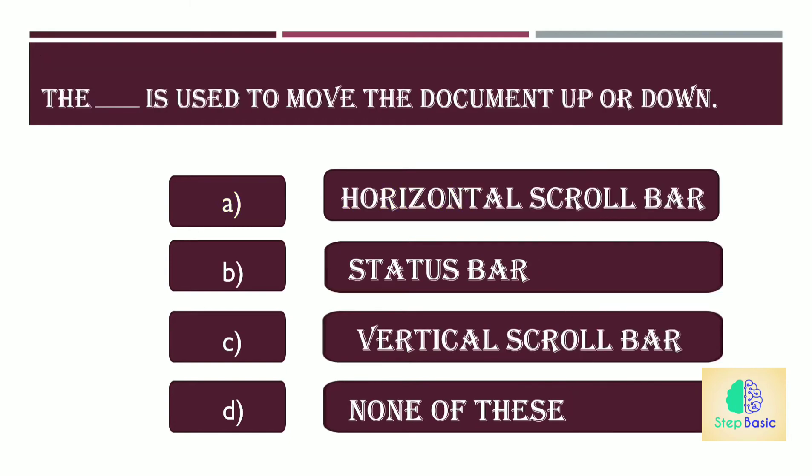The dash is used to move the document up or down. Options are: A. Horizontal scroll bar, B. Status bar, C. Vertical scroll bar, or D. None of these. The answer is C, vertical scroll bar.